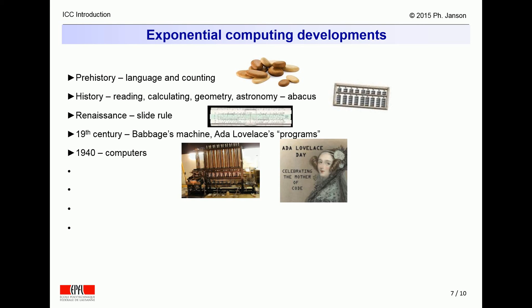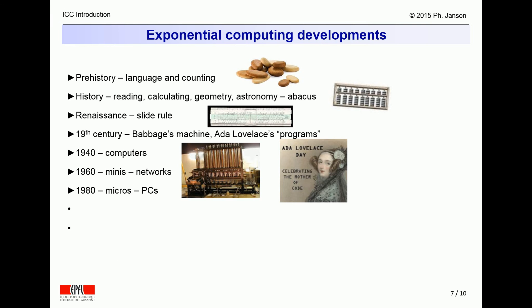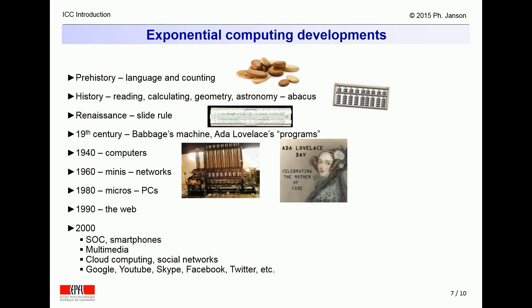The first electronic computers, which occupied entire rooms, did not appear until the early 40s. The 60s saw the advent of more compact minicomputers, and the 80s brought portable microcomputers. Although ARPANET, the ancestor of the Internet, was switched on in 1969, the Web did not emerge until the early 90s. The explosion of multimedia, web applications, Google, Facebook, Twitter, etc., portable devices, smartphones and tablets, which today gate and control access to the Internet via cloud computing, all date back only to the present century.